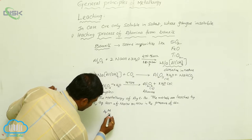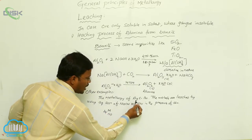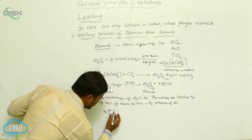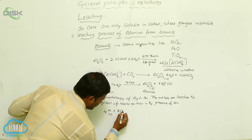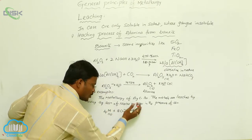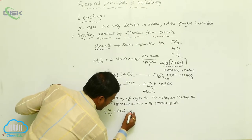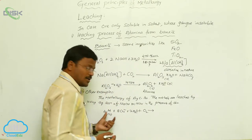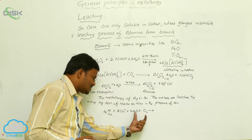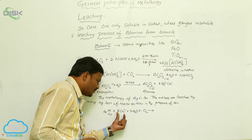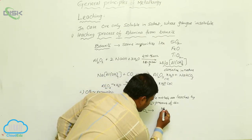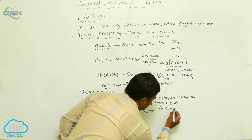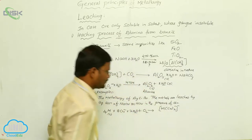The metal in solid form — here the metals are Aurum and Argentinum, that is silver and gold present in the earth's crust — reacts with either sodium cyanide or potassium cyanide, and also in the presence of oxygen. Under these reaction conditions, the metal reacts with cyanides to produce [M(CN)₂]⁻ complex.